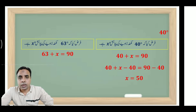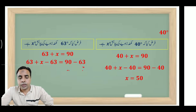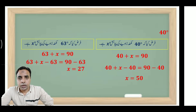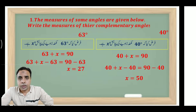Is tarah se 63 plus x is equal to 90. Yahan par tarafain mein se 63 tafriq karne par — subtracting 63 from both sides — the complementary angle comes to be 27. The complementary angle of 63 degrees is 27 degrees. Is tarah se sawalat diya jaye toh us tarah se hal kar sakte hain.